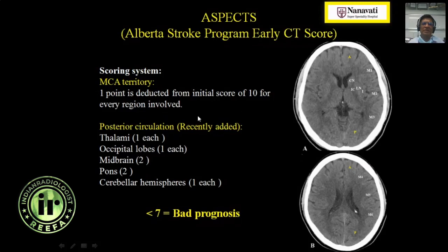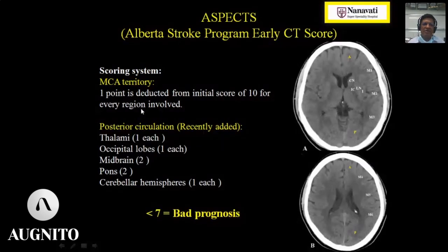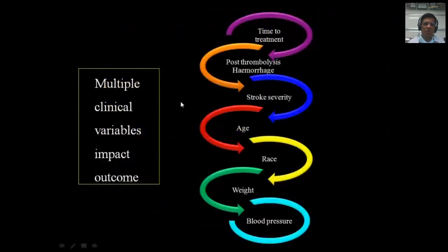Because ASPECTS became very popular in the supratentorial compartment, a similar scoring system was developed for the posterior fossa. Hypodensity in the thalamus, occipital lobe, midbrain, pons, or cerebellum results in point deductions. Whether supratentorial or infratentorial, a score of less than 7 has bad prognosis, while a score of more than 7 has good prognosis.